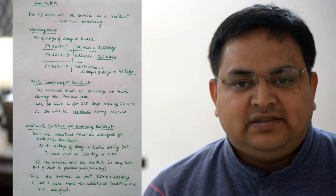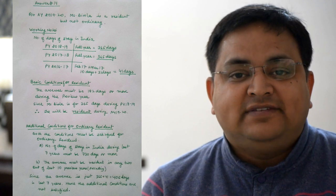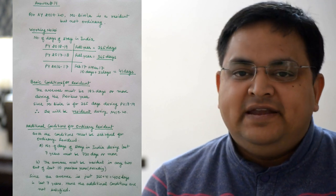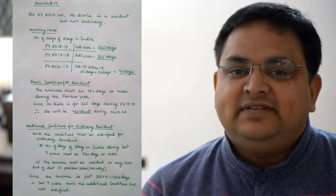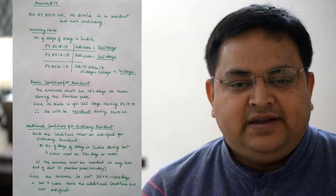Total agar aap karenge, toh inका total just 406 days ban raha hai preceding 7 years ka — 7 years toh woh thi hi nahi, usse pehle ye sirf 2 saal thi, toh 406 days banega. 730 days nahi ban raha hai. So she is not satisfying one of the additional conditions. Dono conditions satisfy karna zaroori tha, that is the reason she will become a not ordinary resident.